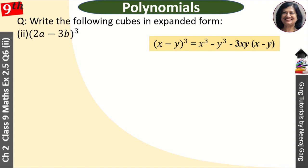First of all, we will do a comparison. Here is our question: 2a minus 3b whole cube. So what is x? X is 2a. And what is y? Y is 3b.